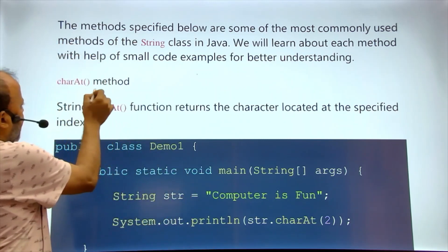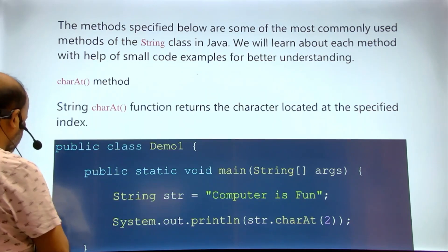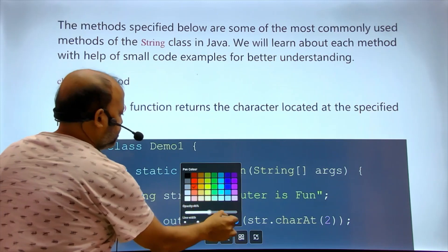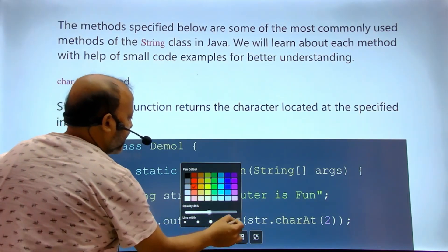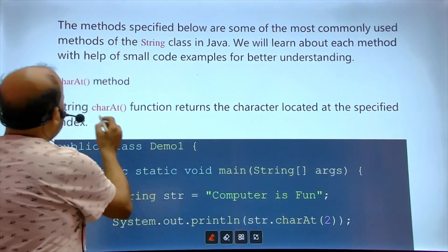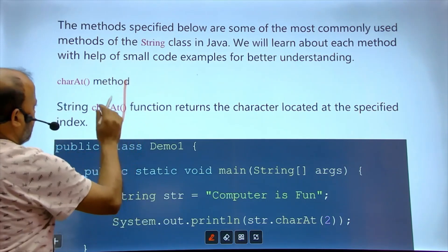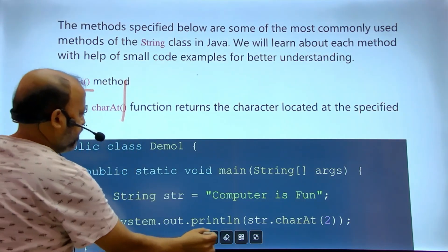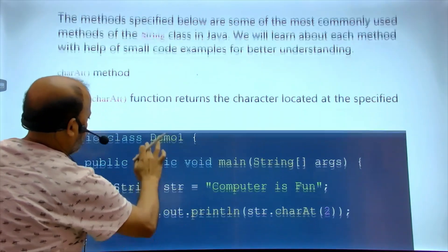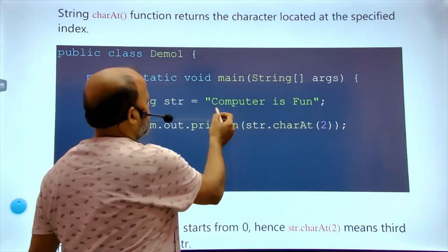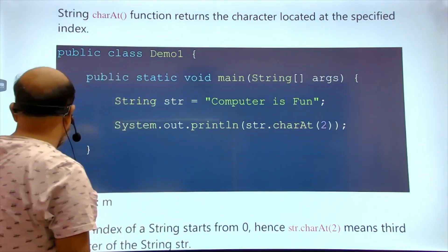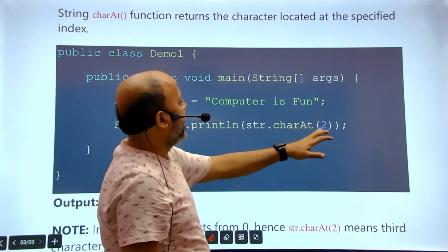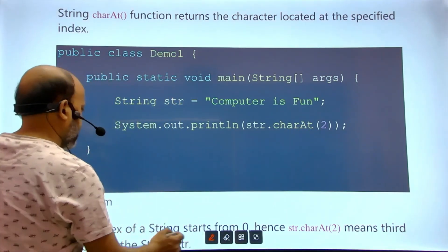The first string function we will be doing is charAt(). By the name only, it means character at a location. For example, my string str is 'computer is fun'. If I call charAt(2), what is there at position 2?